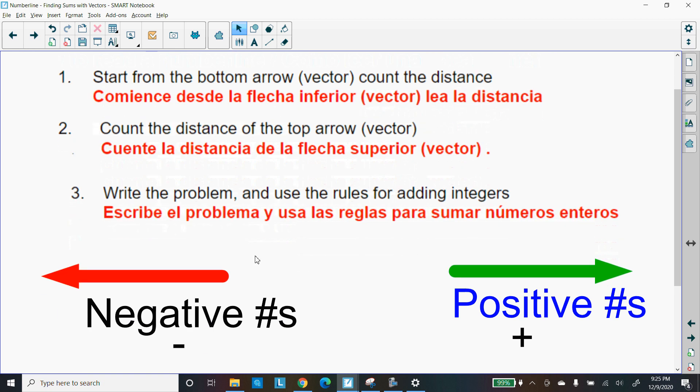One thing you should know about the number line, when you're moving to the left on the number line, you're going towards the negative numbers, so that will be negative. When you're moving towards the right direction, that'll be going towards the positive numbers, so those numbers would be positive.